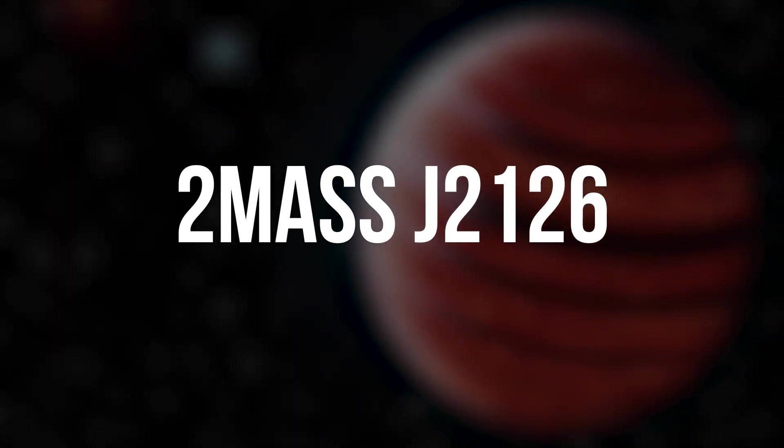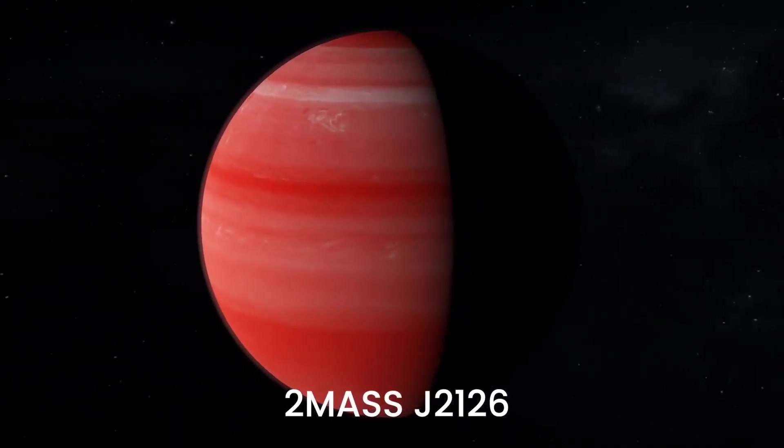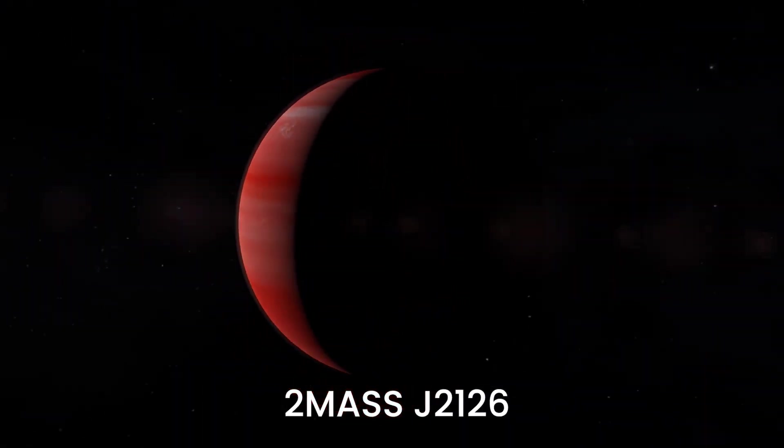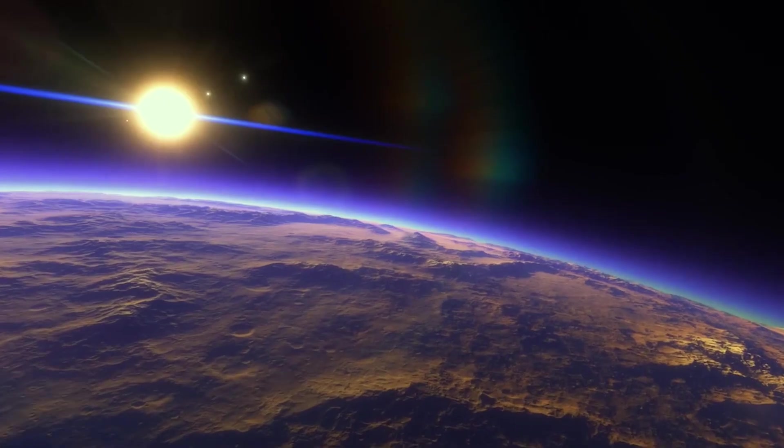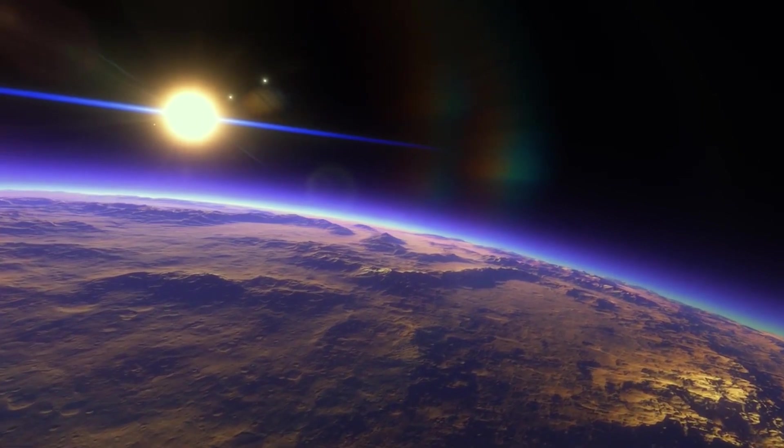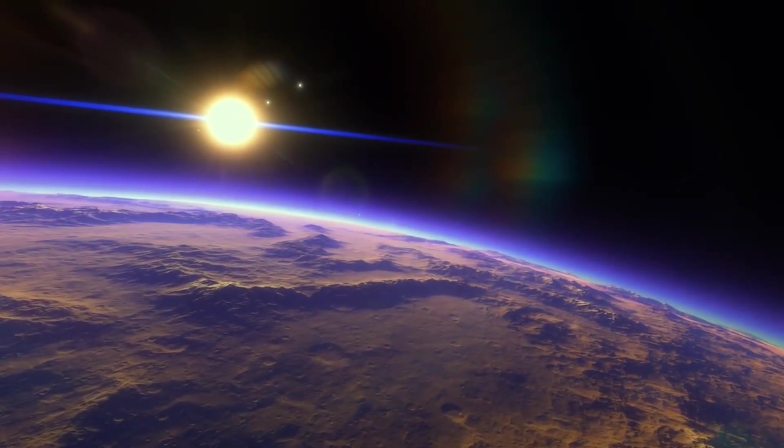2MASS J2126. It's hard to imagine how ample space is. And 2MASS J2126 is a perfect example of this. People used to think this bizarre place was a free-floating or solitary planet. However, this celestial body isn't that alone.